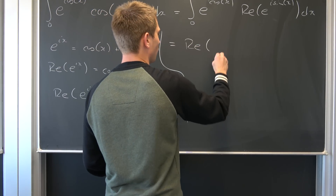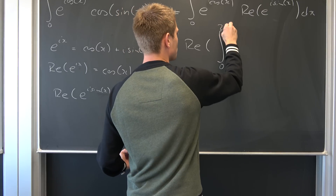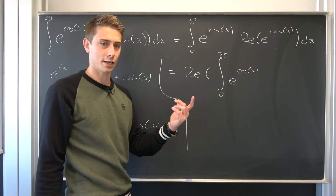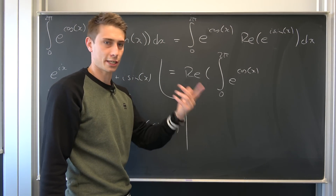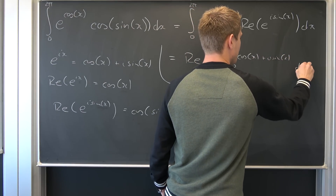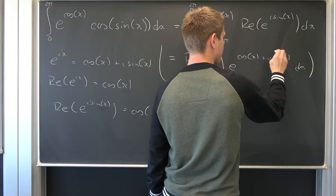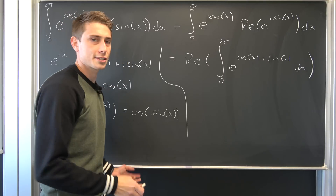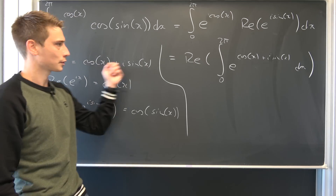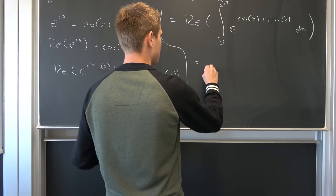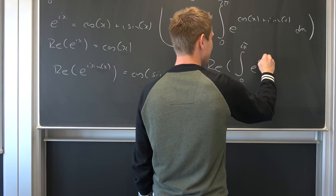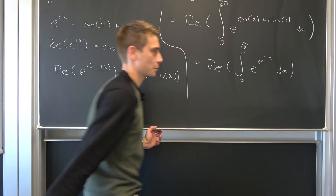So we end up with the real part of the integral from zero to two pi of e to the cosine of x times e to the i times sine of x dx. Using the exponential property we can combine the exponents, turning this into the real part of the integral from zero to two pi of e to the e to the i times x dx.